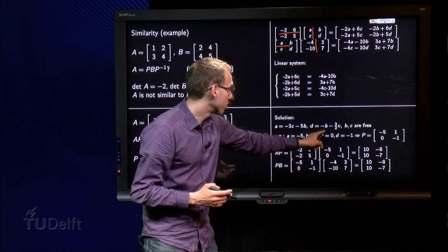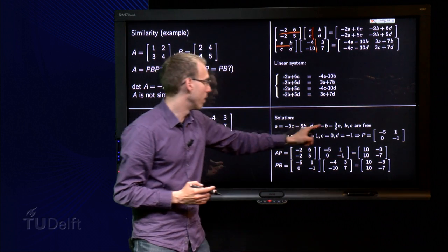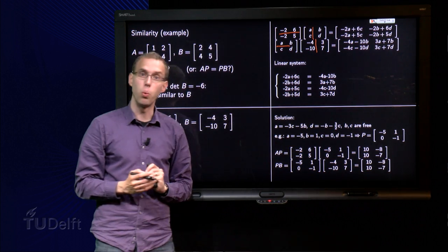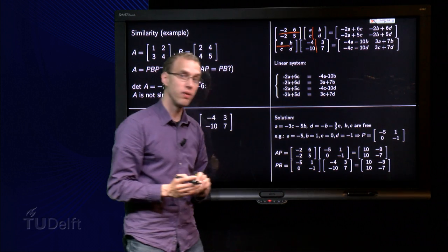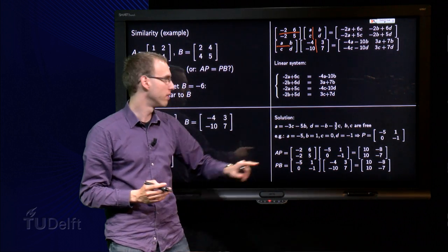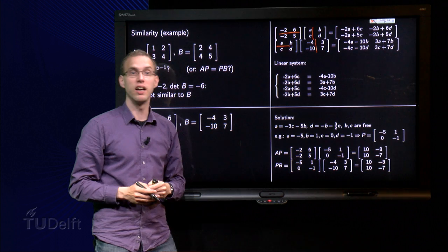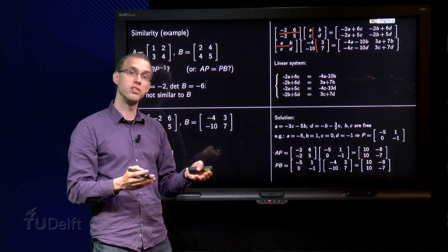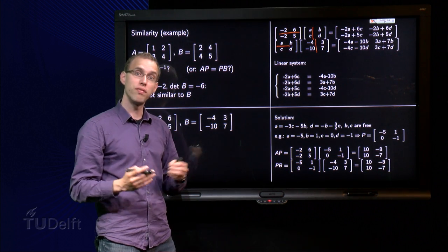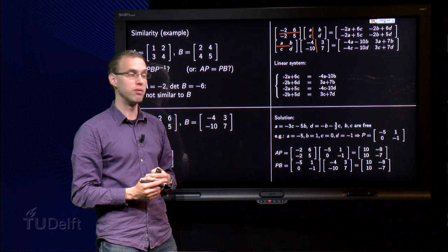So I could take C equals zero and B equals one, and it follows that D equals minus one and A equals minus five, and we get the P over here. Determinant of this P equals five, so it is invertible. So we have found an invertible P, such that A times P equals P times B.